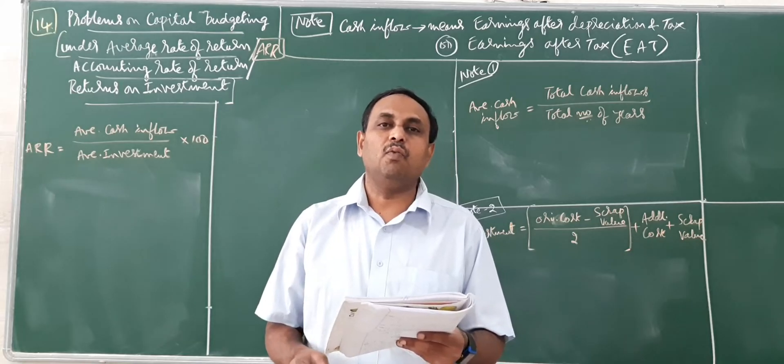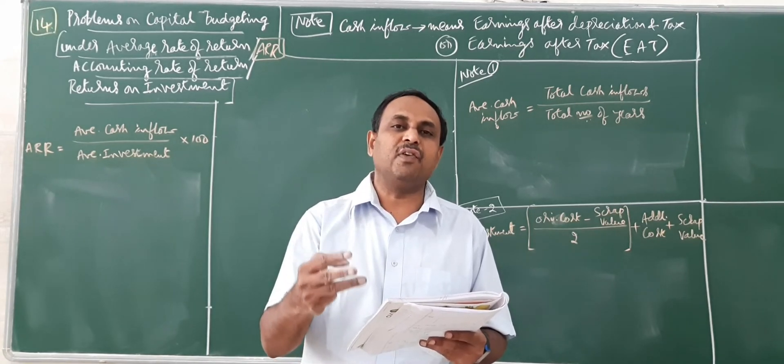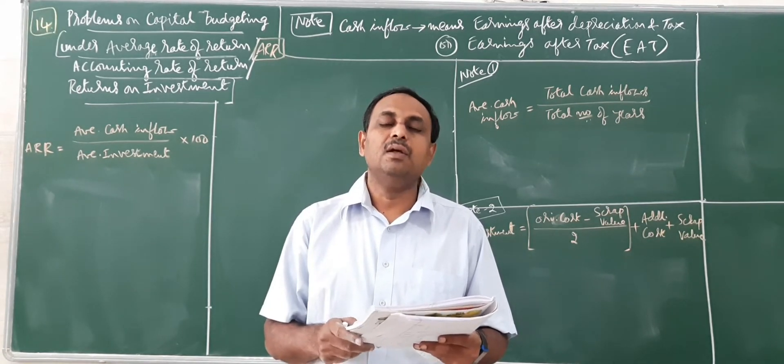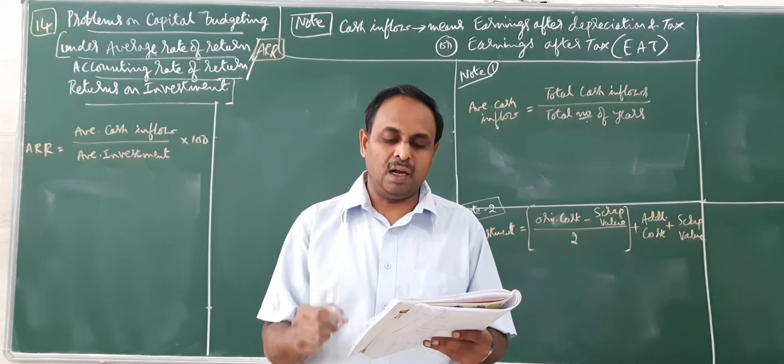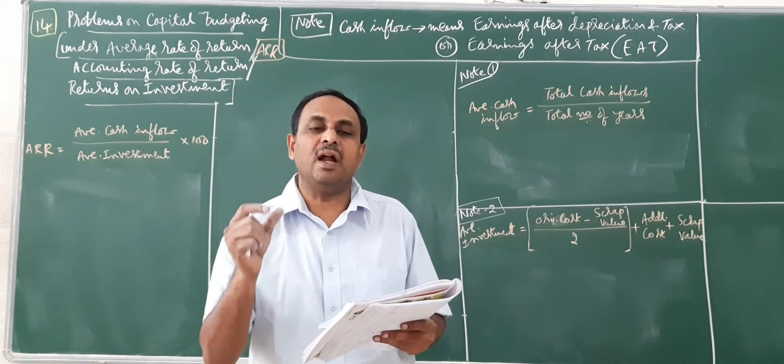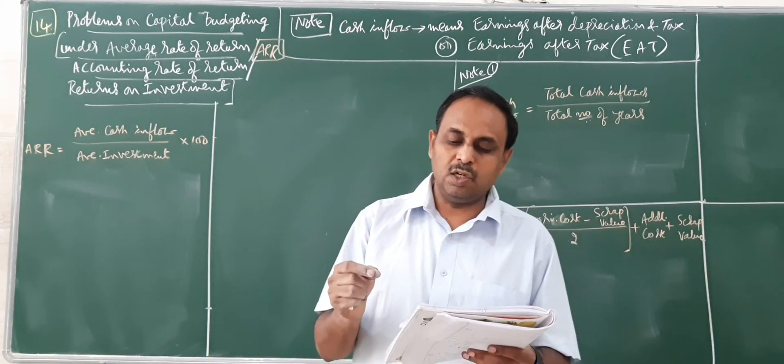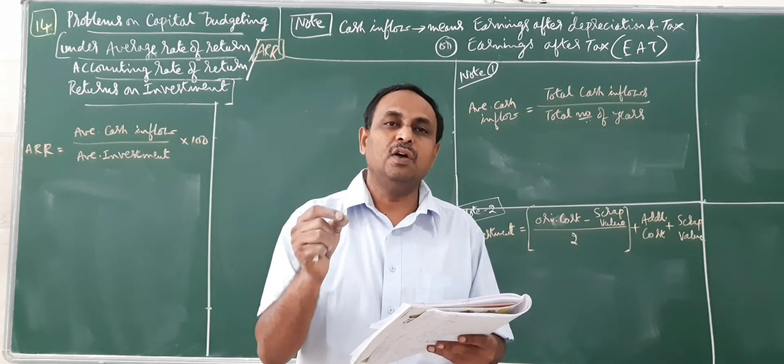So the next problem what we are going to take up is a bit different than the previous one. Again here, determine ARR. We have machinery A and machinery B. Original cost remains the same for both, 56,125 each.